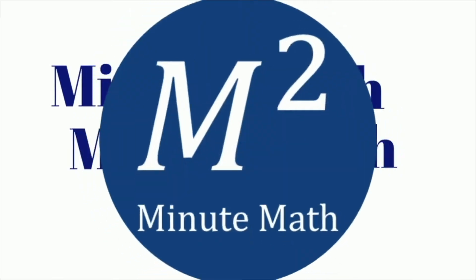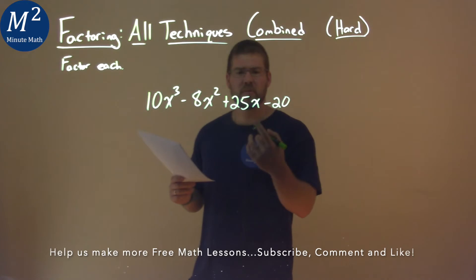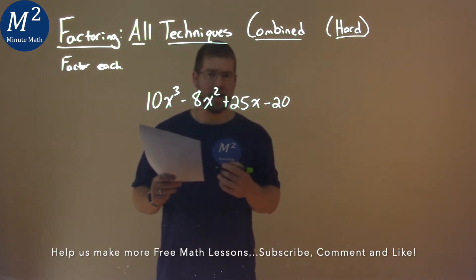We're given this problem right here. 10x to the third minus 8x squared plus 25x minus 20. We gotta factor this.